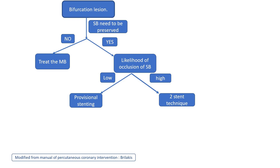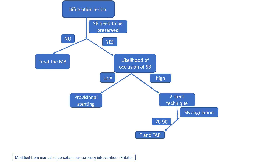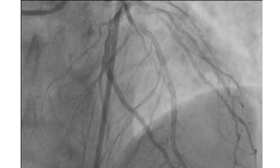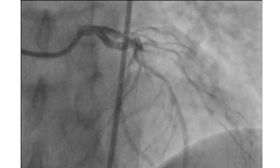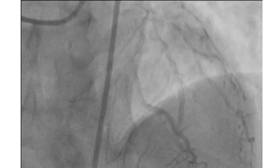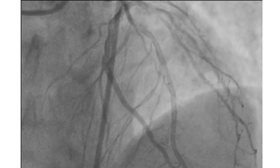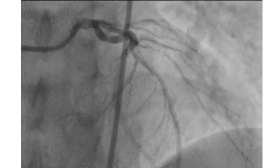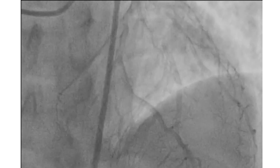We also ask about the angulation of the side branch. If the angle is wide, between 70 and 90 degrees, then a T and T technique can be used. If the angle is small, less than 70 degrees, a crush or culotte technique can be used. In our case, both vessels are significant and the angle is small. So we need to do a two-stent technique from the beginning, and we choose to do DK crush.